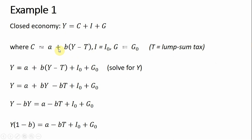Our first step is to plug everything into the above equation. So plugging in the consumption function, the level of investment, and the level of government purchases into this equation. The key here is to solve this equation for Y. First, I'll take B and multiply it through by what's in parentheses, so we get BY minus BT.